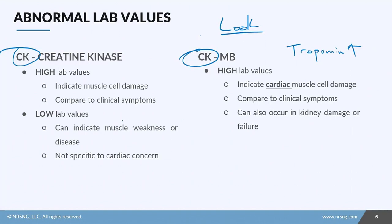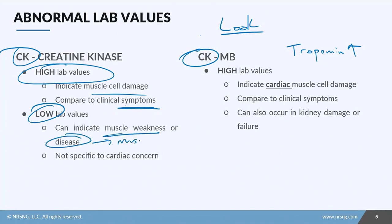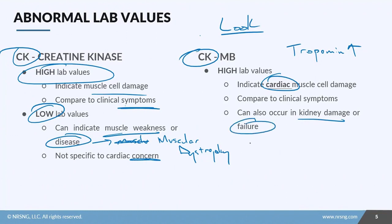Elevated CK specifically indicates some sort of muscle cell damage and is not specific to any particular type — you want to compare that to your patient's clinical symptoms. Low CK levels can indicate muscle weakness or disease, such as muscular dystrophy, but are not specific to any cardiac concern. CK-MB should be low at all times; it will be elevated with cardiac injury, but can also rise due to kidney damage or kidney failure, which is why you need to pay attention to the patient's clinical symptoms, overall diagnosis, and lab trends.